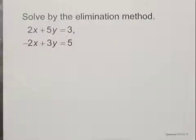Solve by the elimination method. We have a system of equations 2x plus 5y equals 3, and negative 2x plus 3y equals 5.